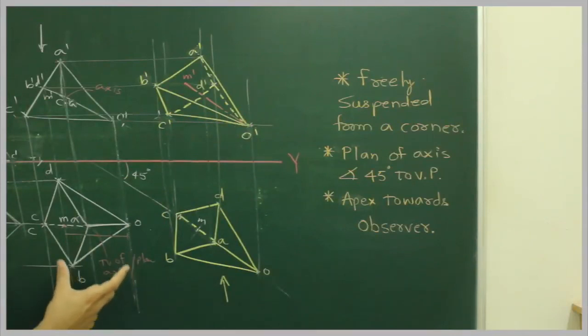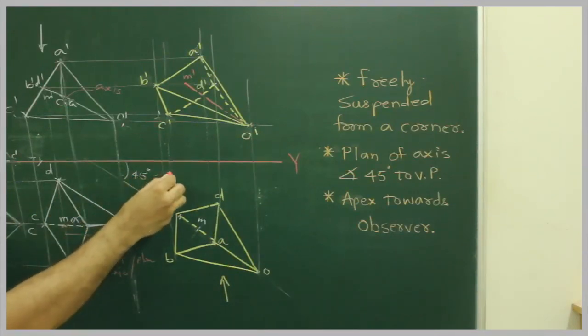So in this case, when we wanted plan of axis inclined, so we took this axis and we have cut directly. So this angle is beta.